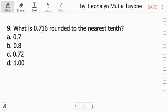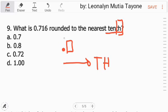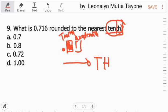Number 9: What is 0.716 rounded to the nearest tenth? It has 'th'. Again, after the decimal point going to the right, it has 'th'. The first one starts with tenths. Next is hundredths. The question is about tenths. So this is what we're looking for, the first one. This is the first one. So what is 0.716 rounded to the nearest tenth? This is our rounding place, the seven. After seven is 1. 1 is less than 5. So just erase it. Just keep the seven. So the answer is 0.7. Letter A.